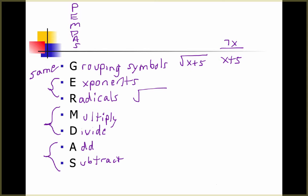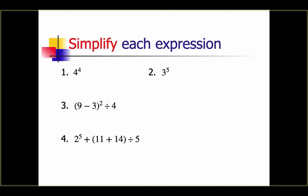Instead of using PEMDAS, I'm going to use GERMDOS because now we have more grouping symbols than just parentheses — there's a bunch more that we use throughout mathematics as you go further on. We've also added radicals because you're going to start seeing more square roots, and as you go forward you'll see even more. So GERMDOS is the mnemonic that will help you remember how to do your order of operations.